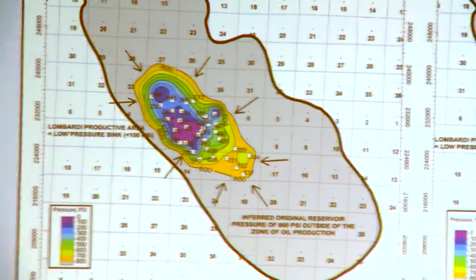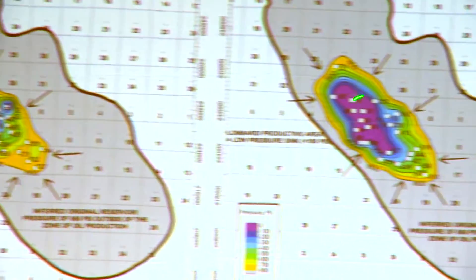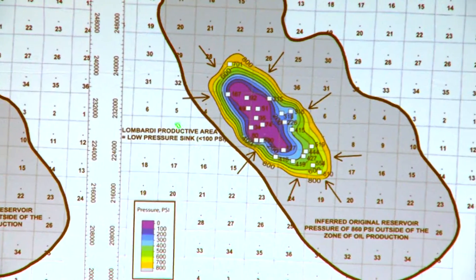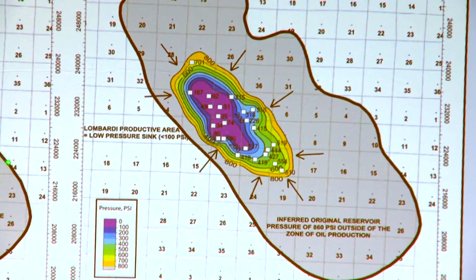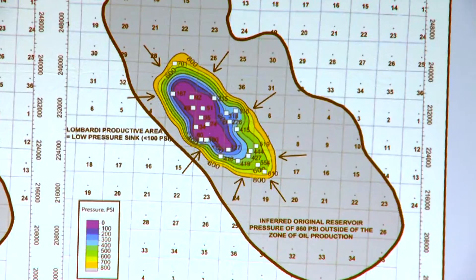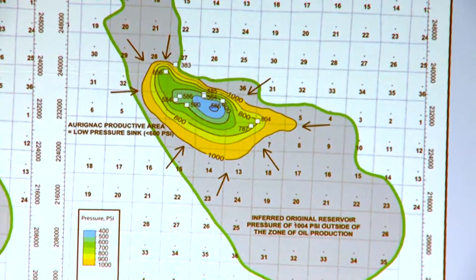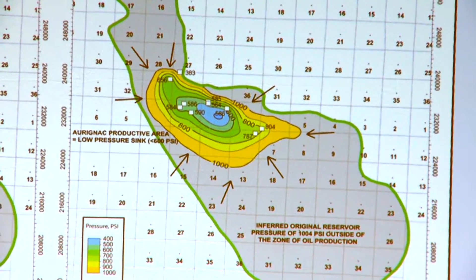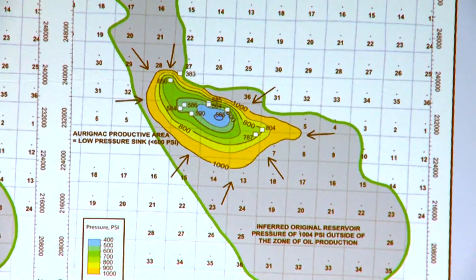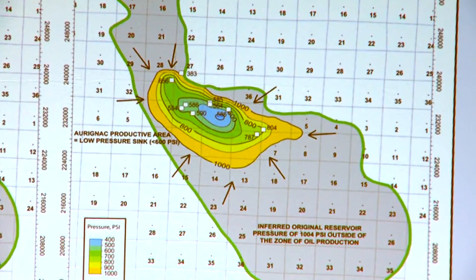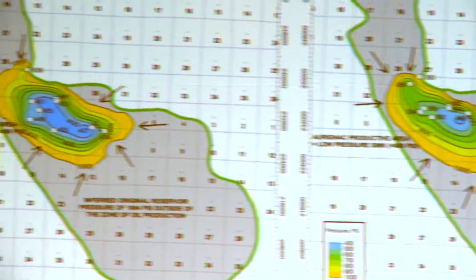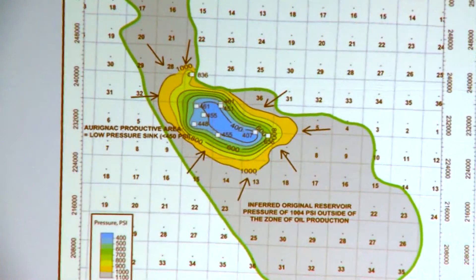In 2016, the data shows exactly the same thing — the pressure sink has gotten even a little bit bigger. That's the Lombardia. A very similar pattern exists in the Aranac. So we have these pressure sinks that are going to draw fluid towards the center of the field, rather than driving it out.